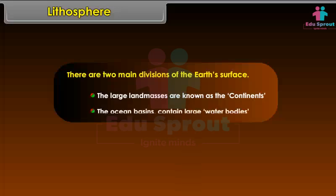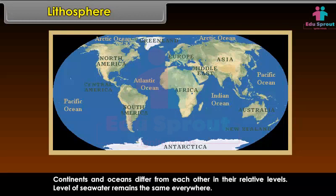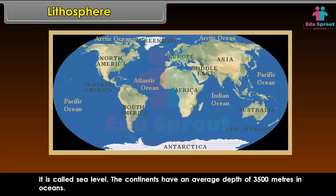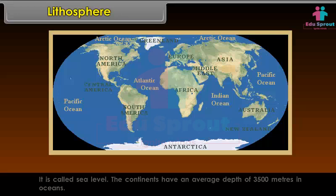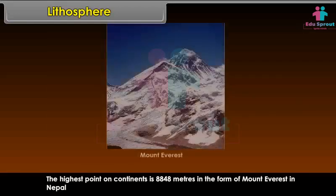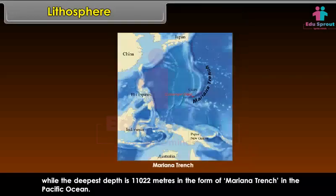The ocean basins contain large water bodies. Continents and oceans differ from each other in their relative levels. The level of sea water remains the same everywhere — it is called sea level. The continents have an average depth of 3,500 meters in oceans. The highest point on continents is 8,848 meters in the form of Mount Everest in Nepal, while the deepest point is 11,022 meters in the form of the Mariana Trench in the Pacific Ocean.